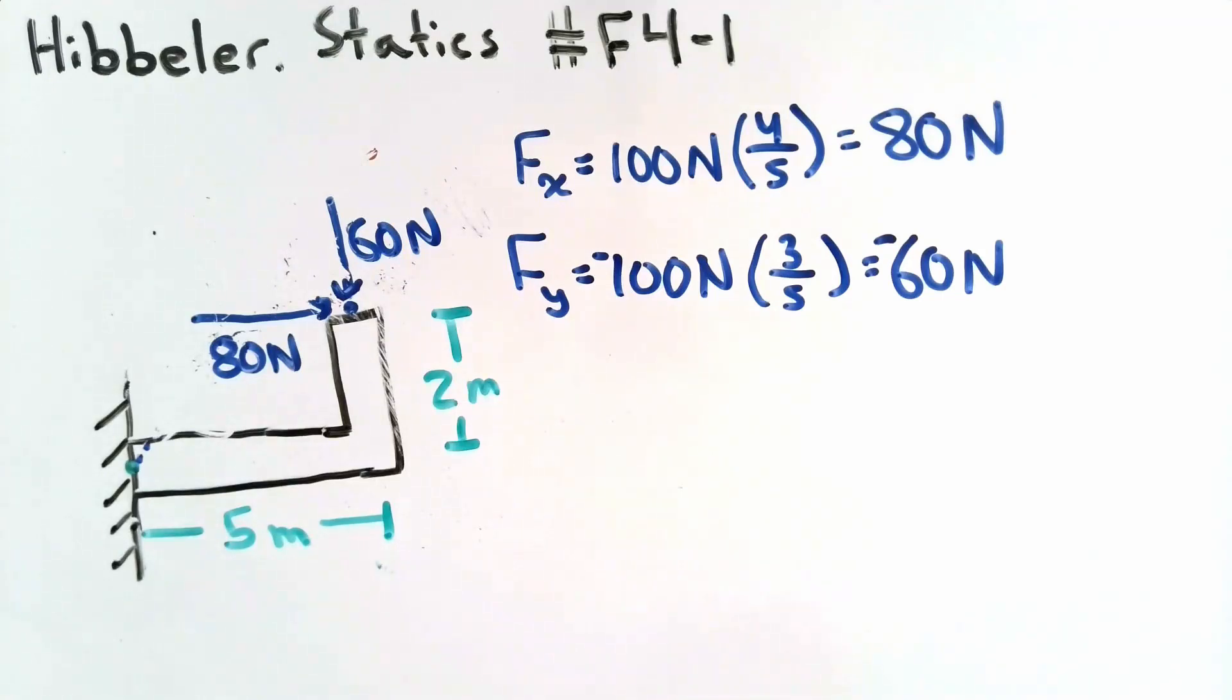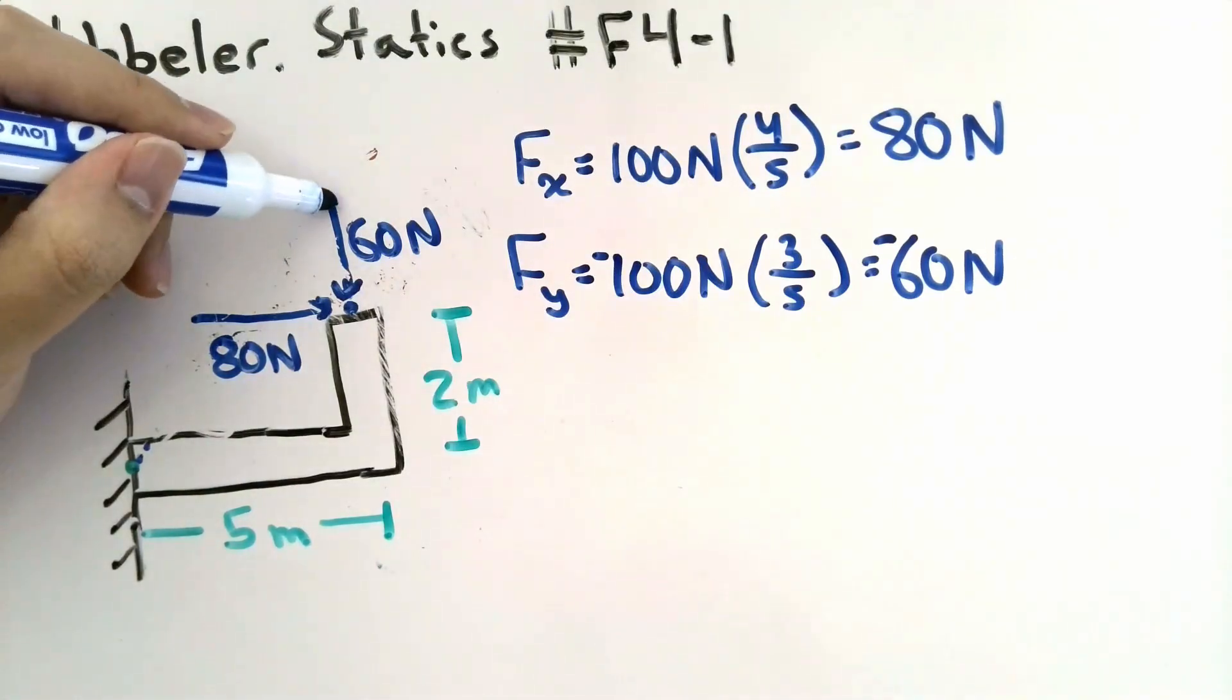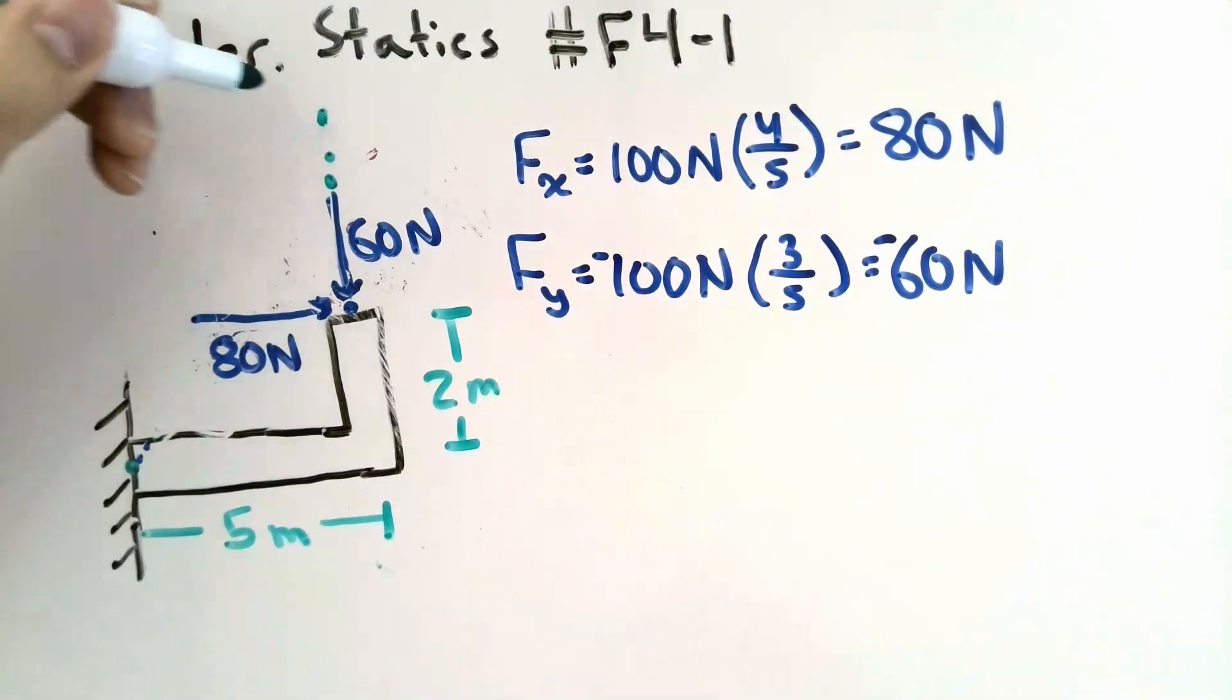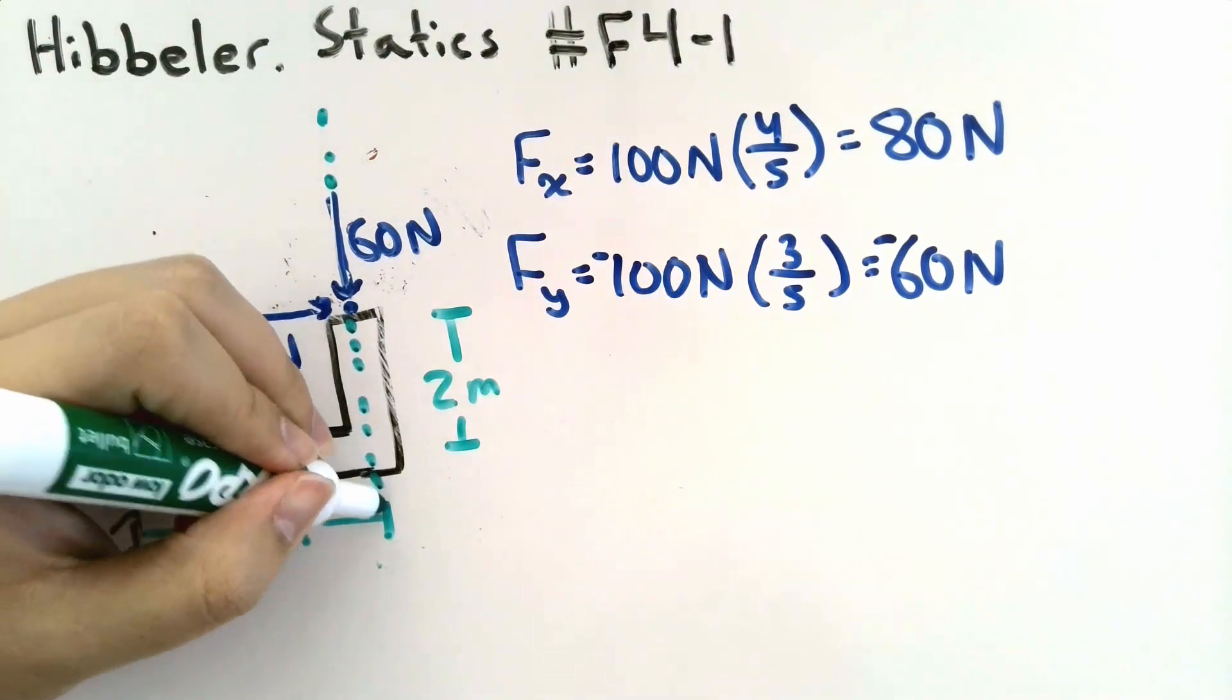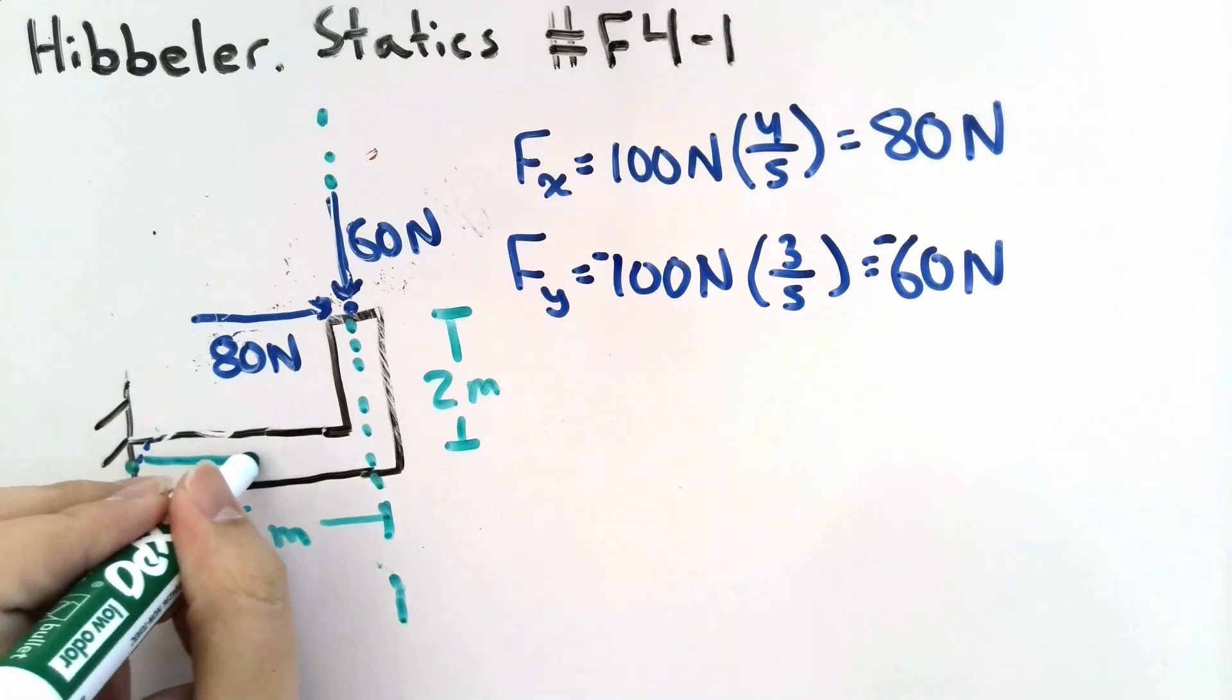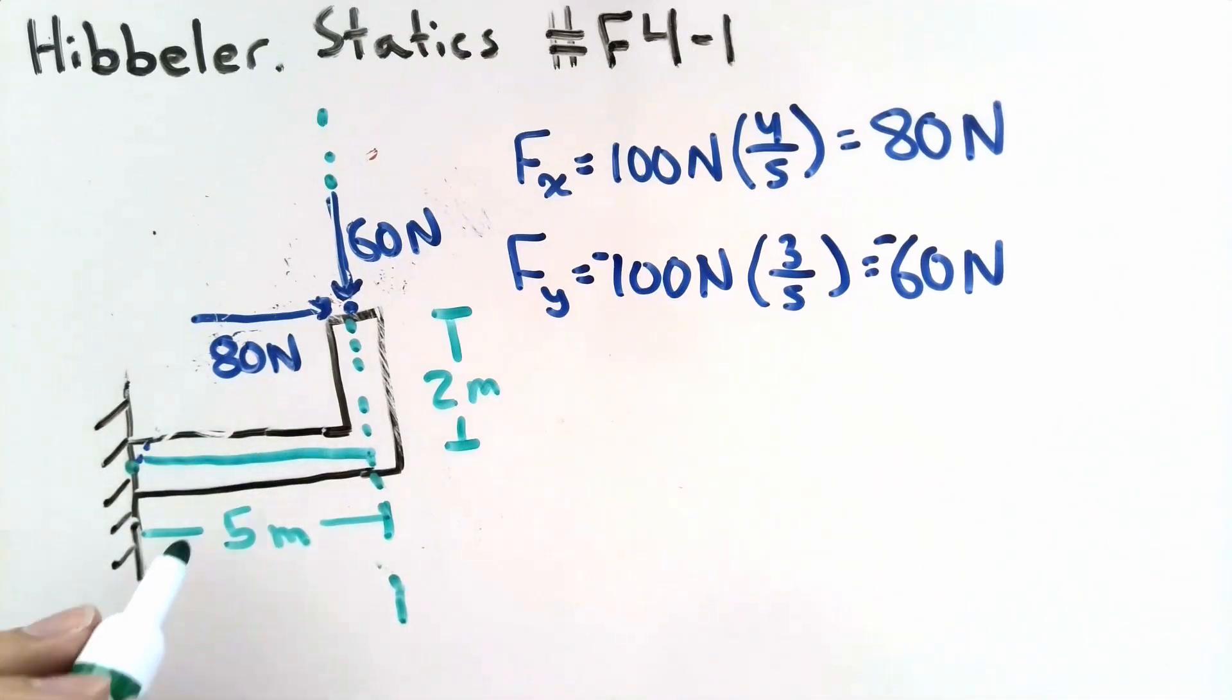We have a 60 N force. However, that force is acting along the vertical or Y direction. If we want to find the distance from our point of interest to the intersection with the line of action of the force, we just need to extend the force. Notice that by extending the force, we can tell that the distance between the point perpendicular to the line of action of the force is simply 5 meters.